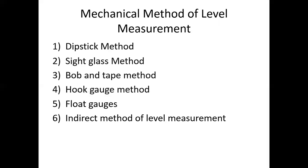In the mechanical methods of level measurement, there are six methods. First is the dipstick method, second is the side glass method, third is the bob and tape method — where we measure the level using a measuring tape — fourth is the hook gauge method, fifth is float gauges, and sixth is the indirect method of level measurement.